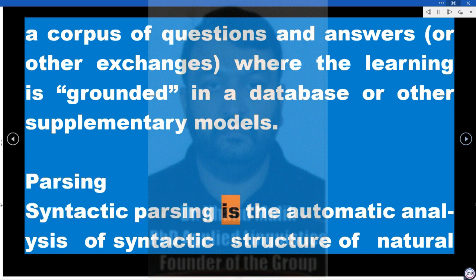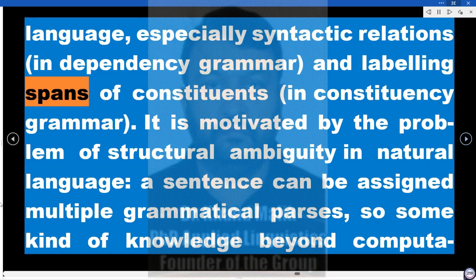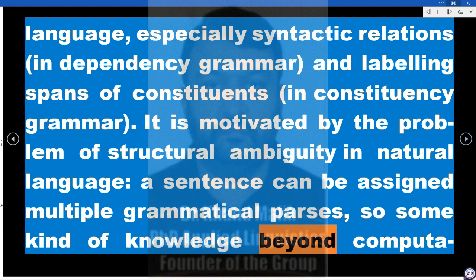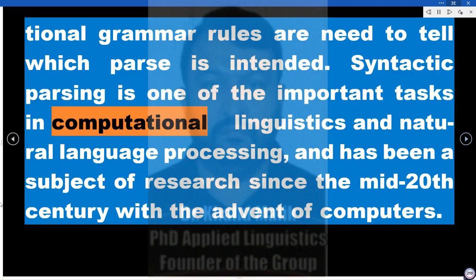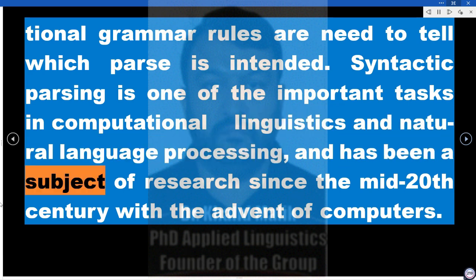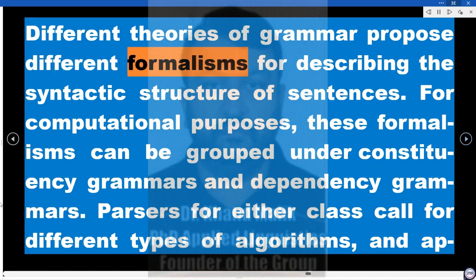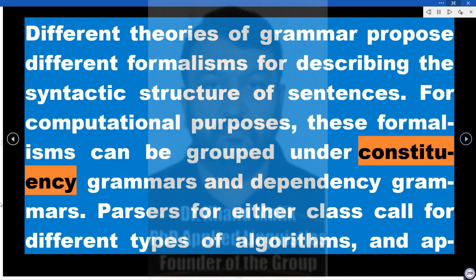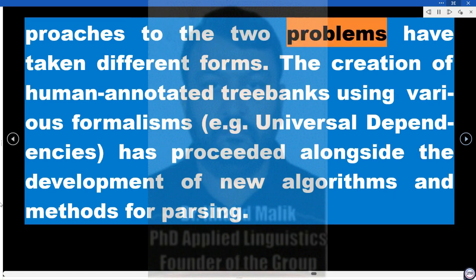Syntactic parsing is the automatic analysis of syntactic structure of natural language — especially syntactic relations in dependency grammar, and labeling spans of constituents in constituency grammar. It is motivated by the problem of structural ambiguity in natural language: a sentence can be assigned multiple grammatical parses, so knowledge beyond computational grammar rules is needed to determine which parse is intended. Syntactic parsing is one of the important tasks in computational linguistics and NLP, and has been a subject of research since the mid-20th century. Different theories of grammar propose different formalisms for describing syntactic structure, grouped under constituency grammars and dependency grammars.